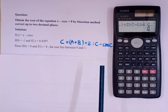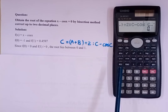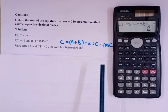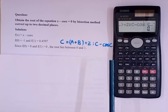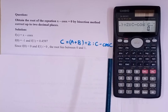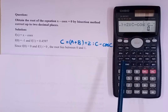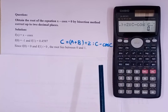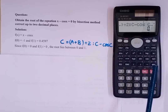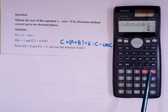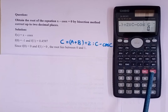Since the question was x minus cos x, I took it as c minus cos c — this depends on your question. If it is x³ minus 3, you can keep it as c³ minus 3. Similarly, if it is x² minus 9, you can keep it as c² minus 9.